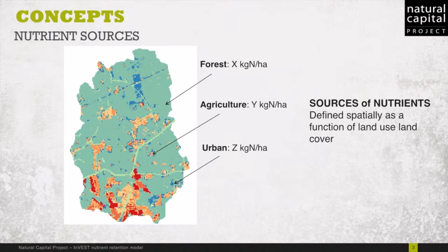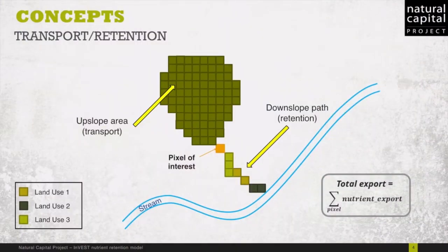Going into more detail, the model first computes the sources of nutrients and they are defined spatially. A user has a piece of land with forest, agriculture and urban areas. Each cell is assumed to have a characteristic nutrient load, and local literature will help inform these values since they are obviously dependent on agricultural practices or stormwater management in urban areas. The model then represents the transport of the nutrients with two components.